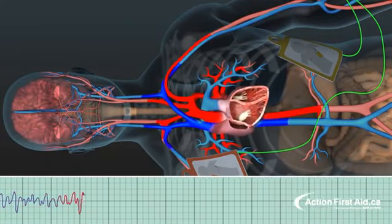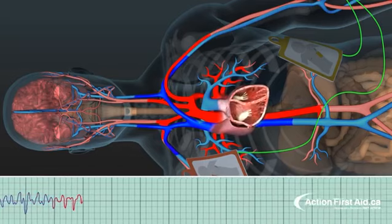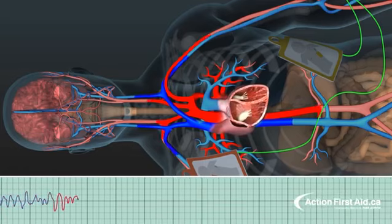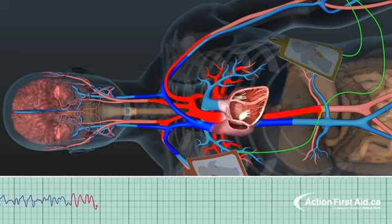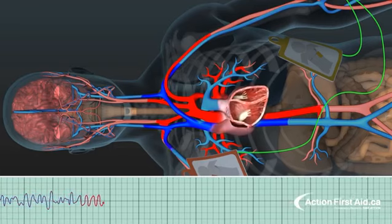The AED is designed to determine if the heart is in a normal rhythm or if it needs to be shocked. In this case, the heart is in ventricular fibrillation, the most common rhythm when someone goes into sudden cardiac arrest.